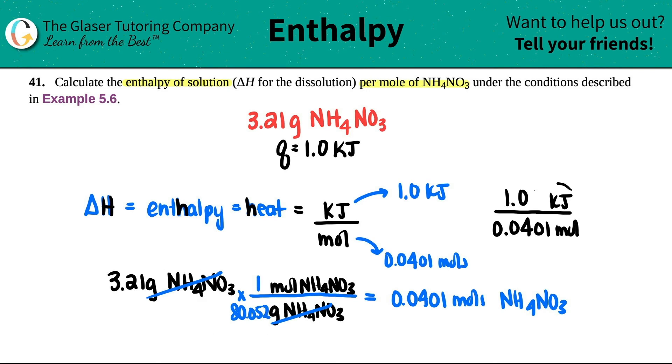But remember, if there's no unit that's the same, you can't cancel them. So that's why enthalpy is always kilojoules per mole. Can't cancel those out. So 1 divided by 0.0401. I get roughly 25.